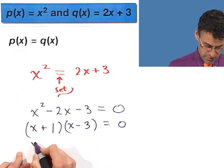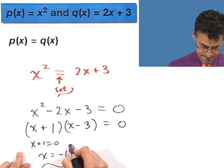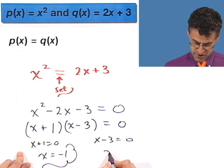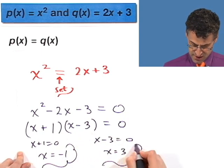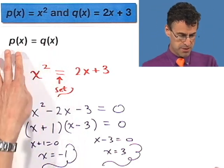So either this equals 0, x plus 1 equals 0, which means x equals negative 1. Or x minus 3 equals 0, which means x equals 3. And so I see there are two solutions to this equation, when p equals q.